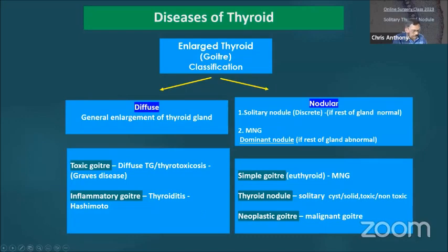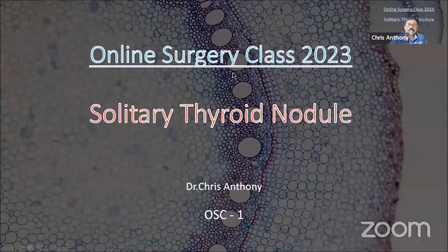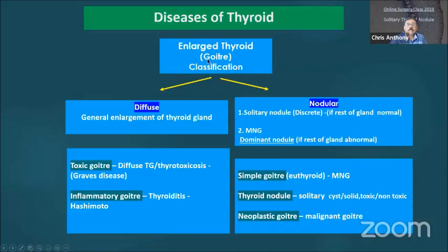What is a thyroid nodule and why is it so important? A thyroid nodule is classified as an enlarged goiter. The enlargement of the thyroid is called a goiter, and it can be a diffuse one or a nodular one.